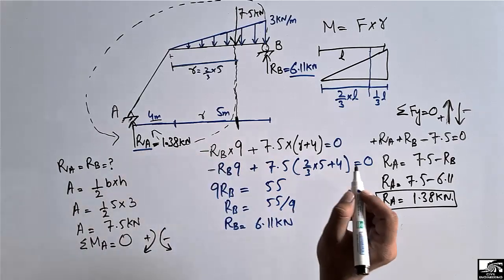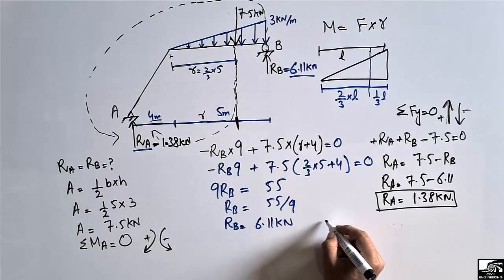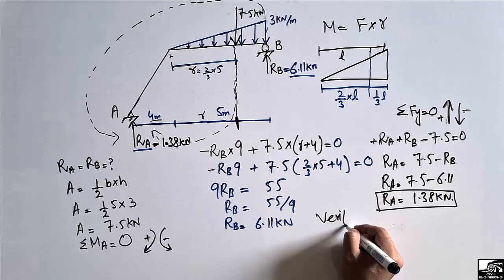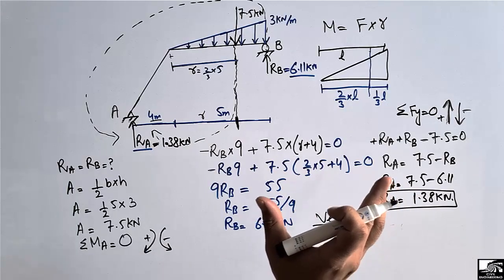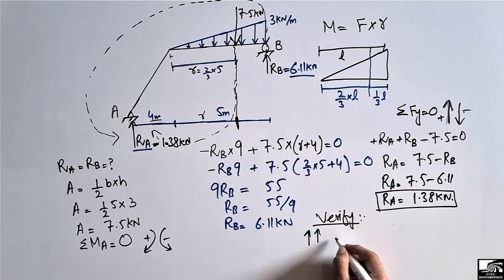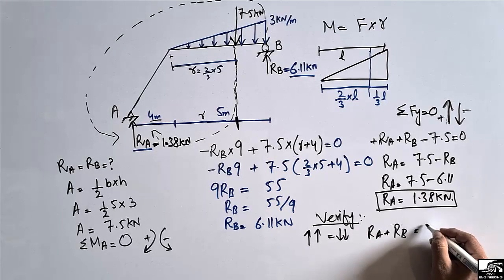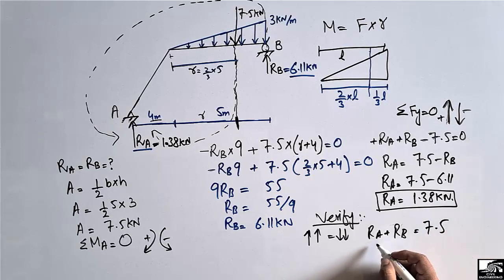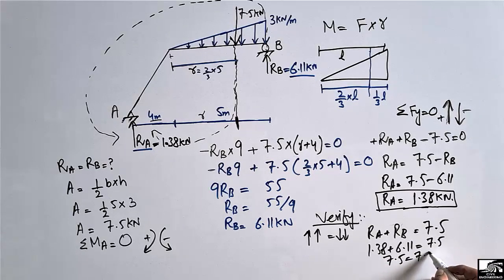To verify the solution, the total upward forces should equal the total downward forces. The upward forces are R_A + R_B = 1.38 + 6.11 = 7.49 ≈ 7.5 kN, which equals the downward load of 7.5 kN. This confirms that the support reactions have been found correctly.